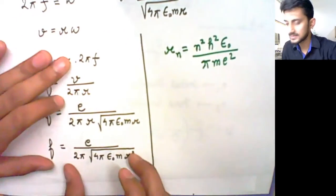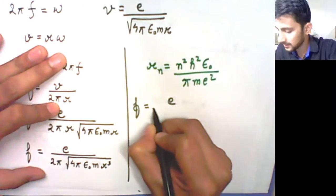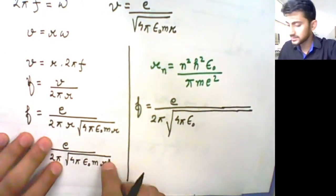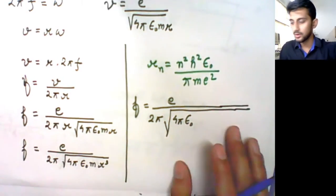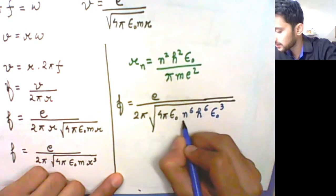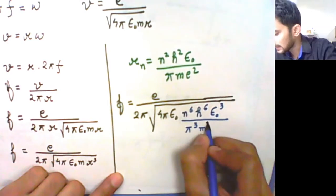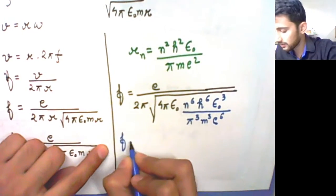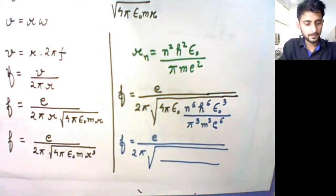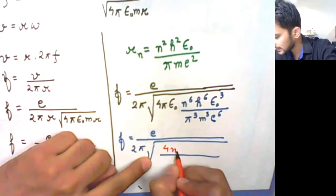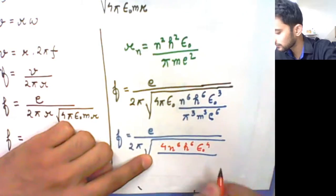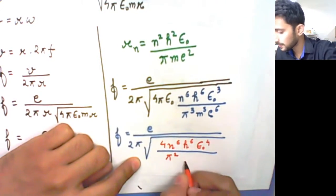If you put rₙ into this formula, you get f equals e upon 2π times the square root of 4πε₀ as it is, with r cubed — since we are in the nth orbit, r³ becomes n⁶h⁶ε₀³ divided by π³m³e⁶. Now inside the square root, the 4π and ε₀ terms interact with the substituted expression.